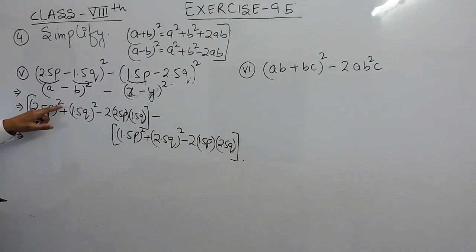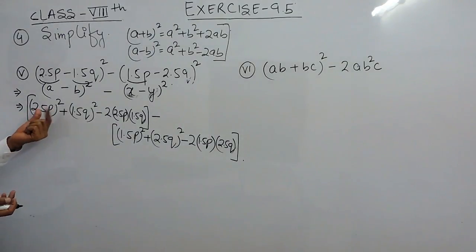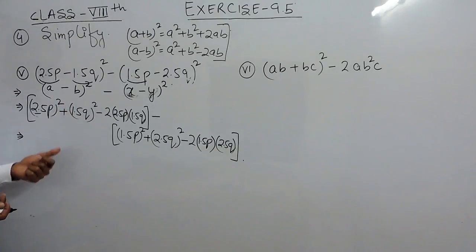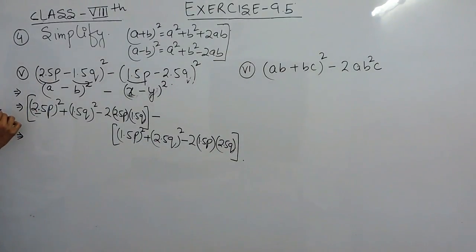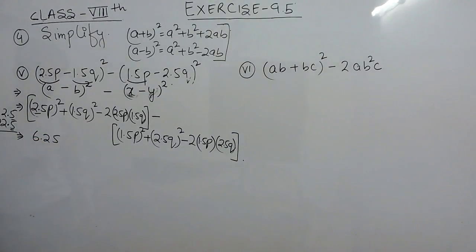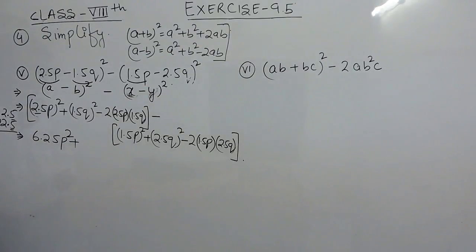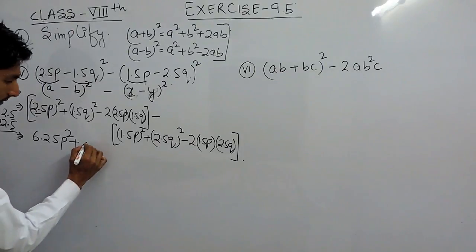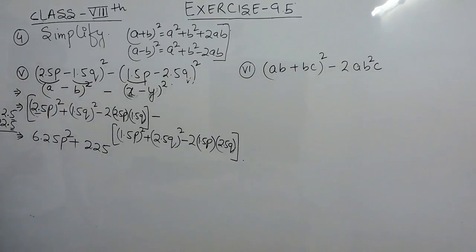Now, (2.5p)² means 2.5² as well as p². To calculate 2.5², I calculate 25² and then place 2 decimal places from the right, because 2.5 × 2.5 is like 25 × 25 with 2 decimal places total. 25² is 625, so placing 2 decimals gives 6.25p². Similarly, 1.5² is calculated as 15² = 225, placing 2 decimals gives 2.25q².